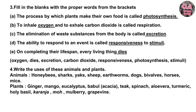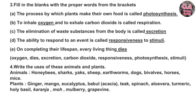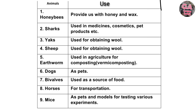We completed question three. Now question four: Write the uses of these animals and plants. Uses of animals: First, honeybees — provide us with honey and wax. Second, sharks — used in medicines, cosmetics, pet products, etc. Third, yaks — used for obtaining wool. Fourth, sheep — used for obtaining wool.